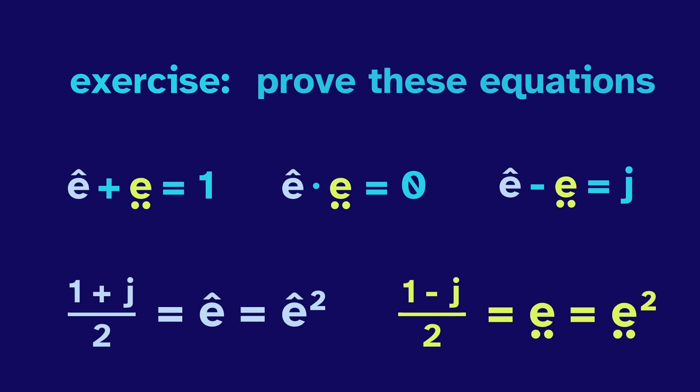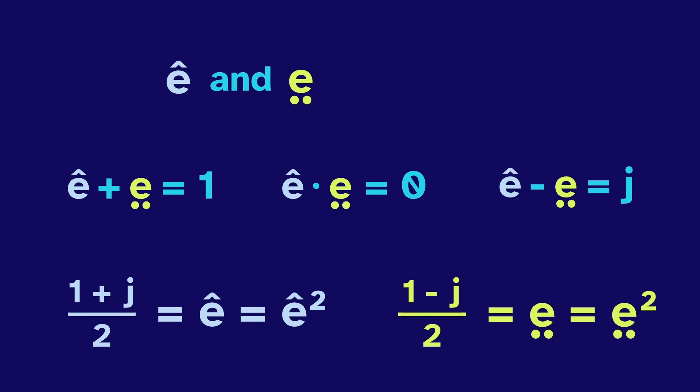As an exercise, prove these equations. They're really useful, especially since e hat and e shoes form a basis. They make this diagonal grid. Any split number is some x e hat plus y e shoes.